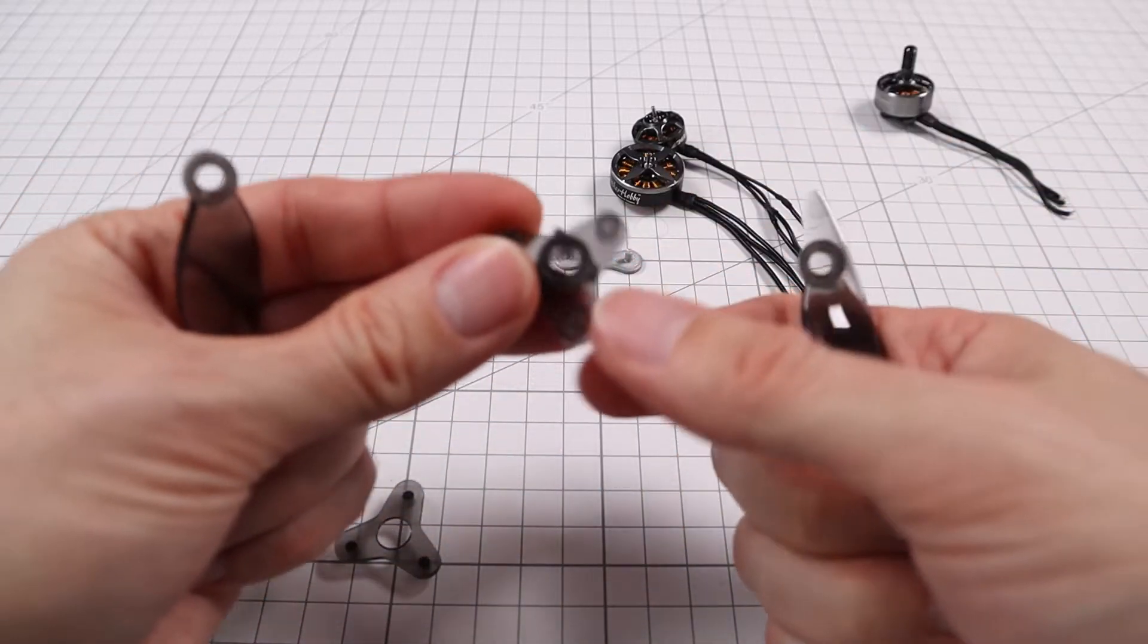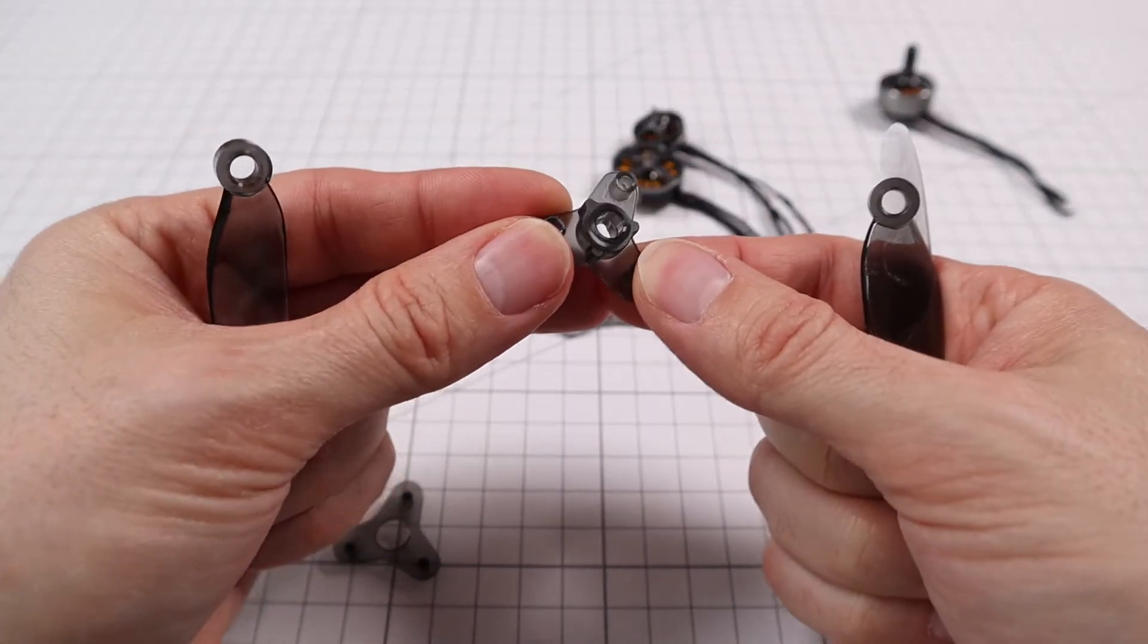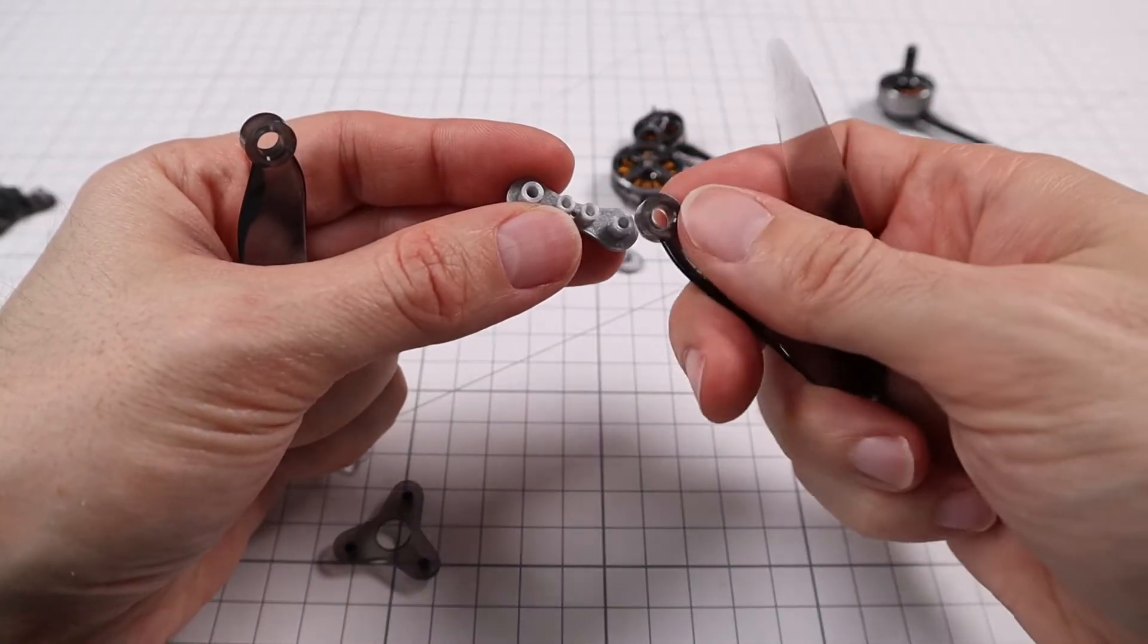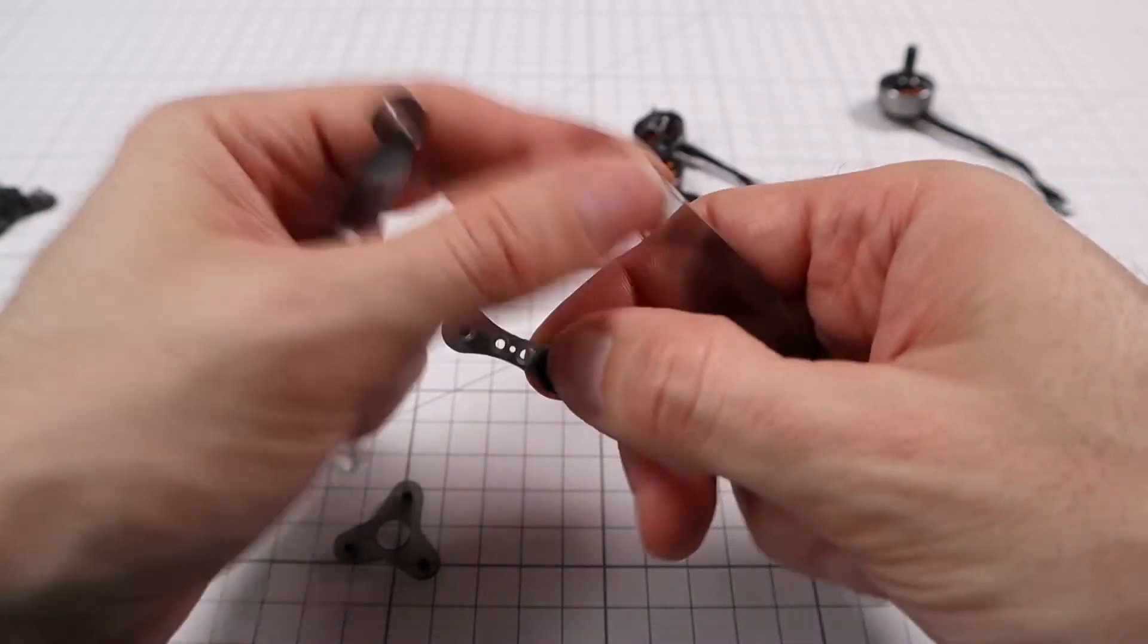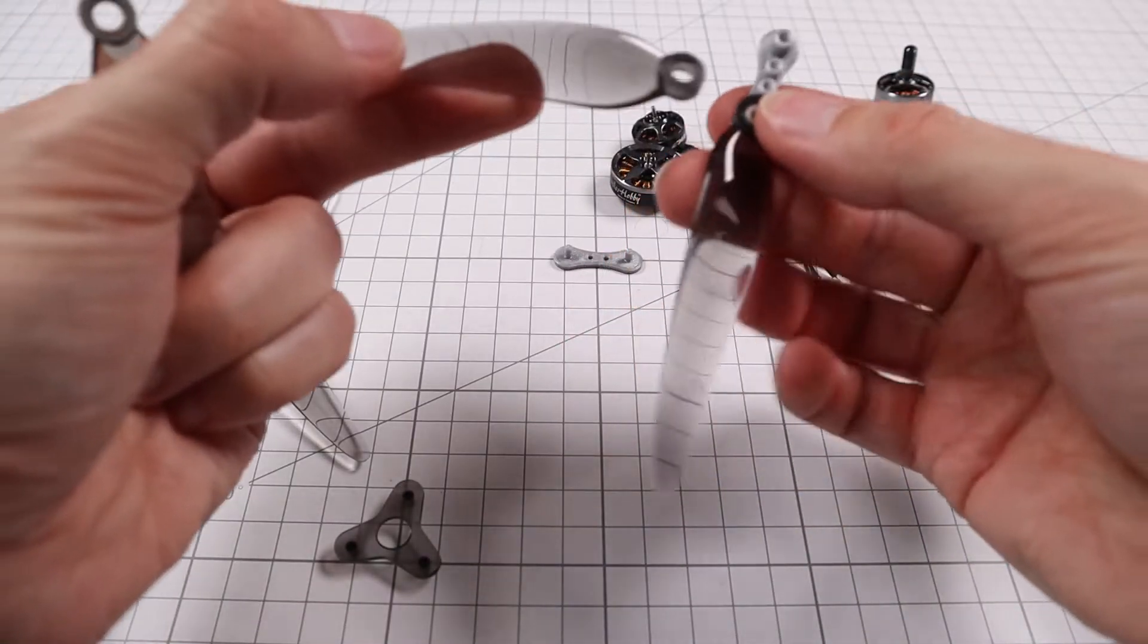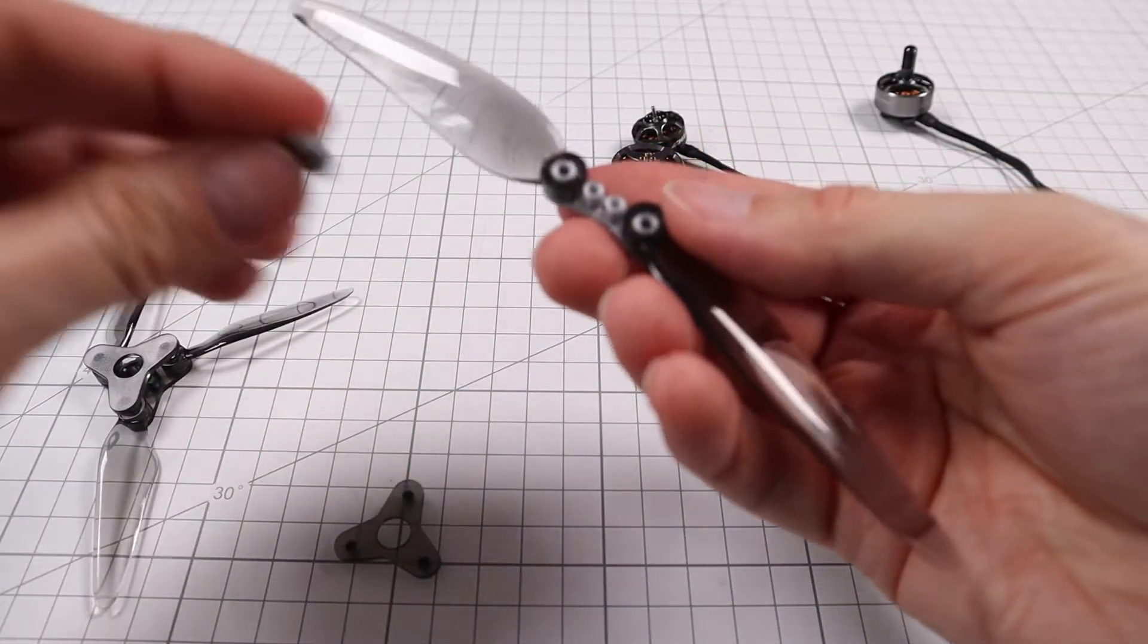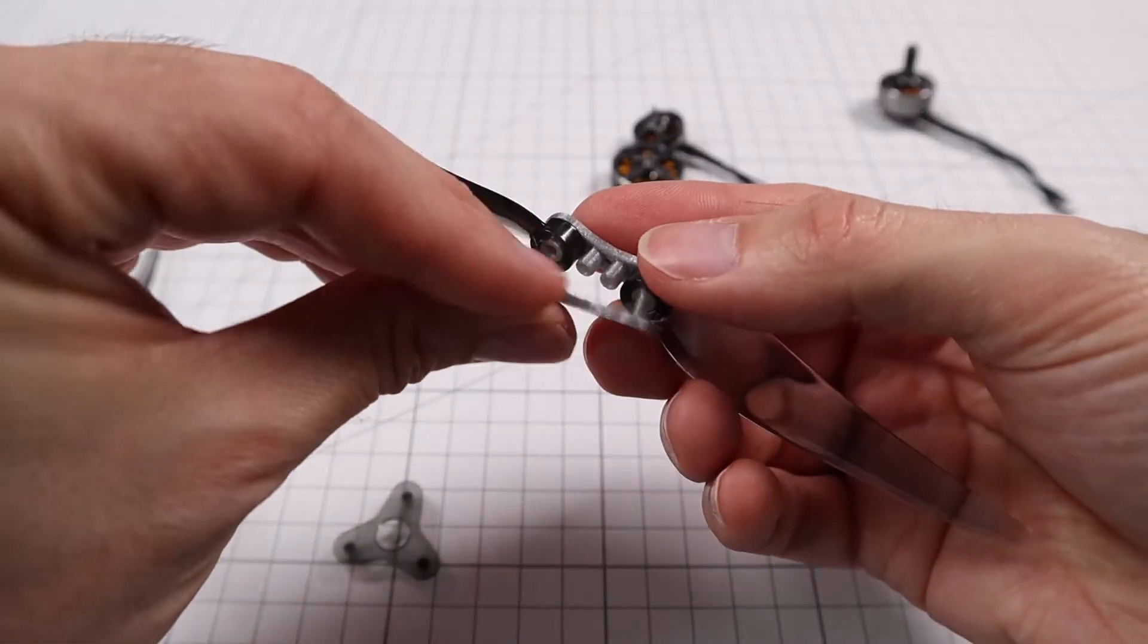You just push this into each other like this, and now you have a foldable, in this case a 7-inch propeller. I've done this also to this one here already, and now you can just push this on top of here and then use two screws to tighten this down.